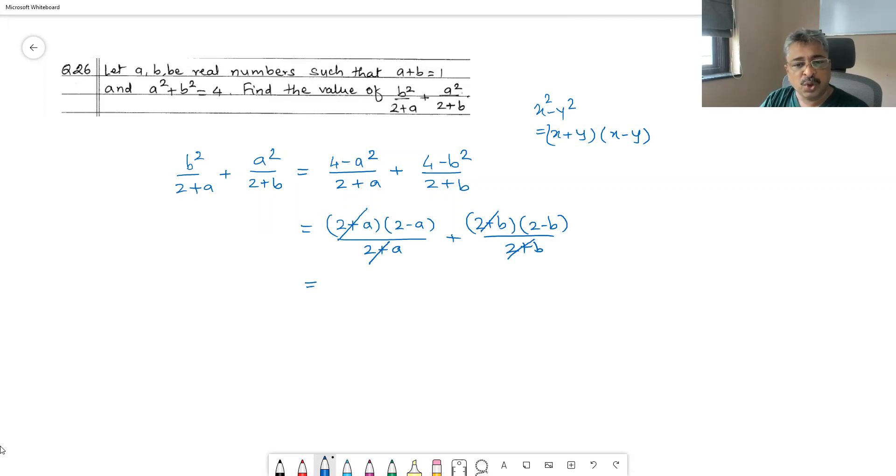Therefore it becomes so easy, and therefore we end up getting 2 minus a plus 2 minus b, which equals 4 minus a plus b. Now, we want numerical value of this. Therefore, we must know what is a plus b, and a plus b is given to us. It is 4 minus 1, which is equal to 3.